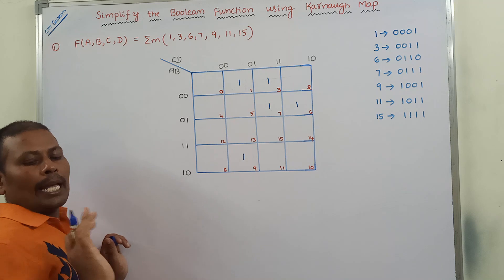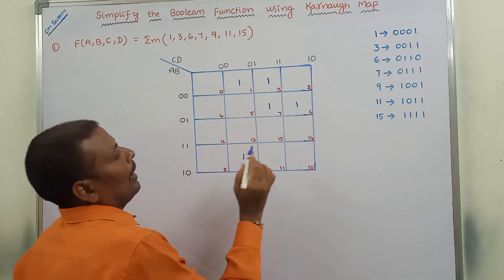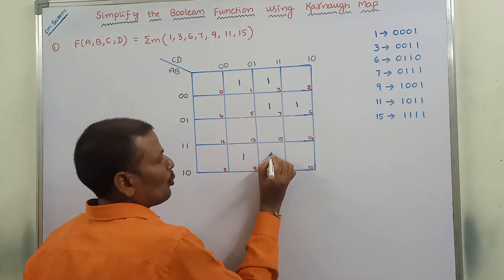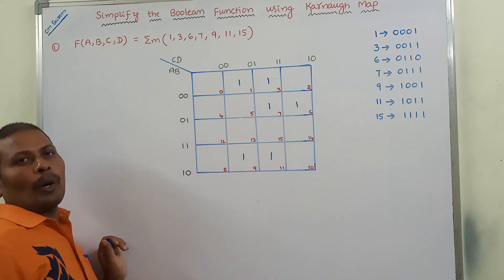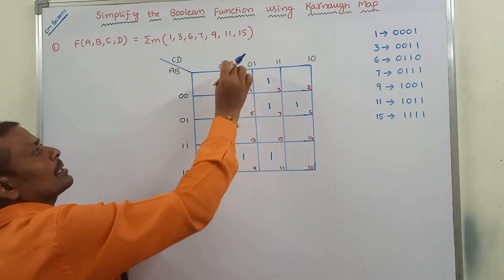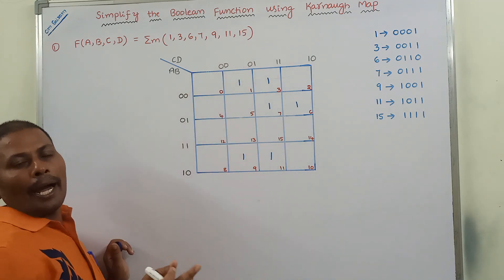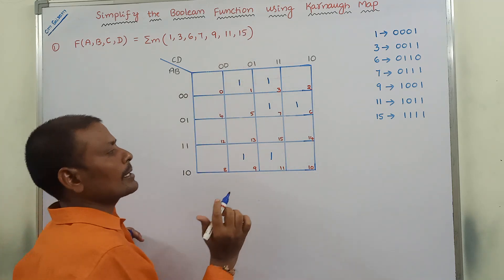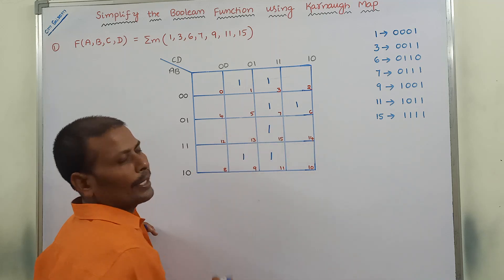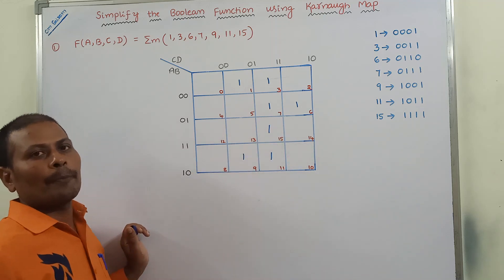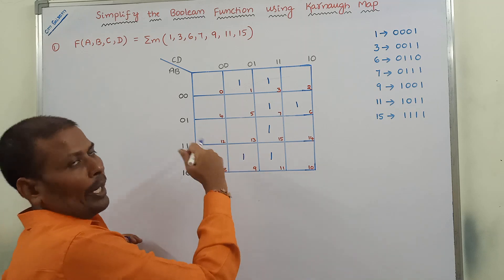Identifying cell number 11 and placing 1 — this is cell number 11. Next, identifying cell number 15 and placing 1. So this is one way of filling the Karnaugh map.